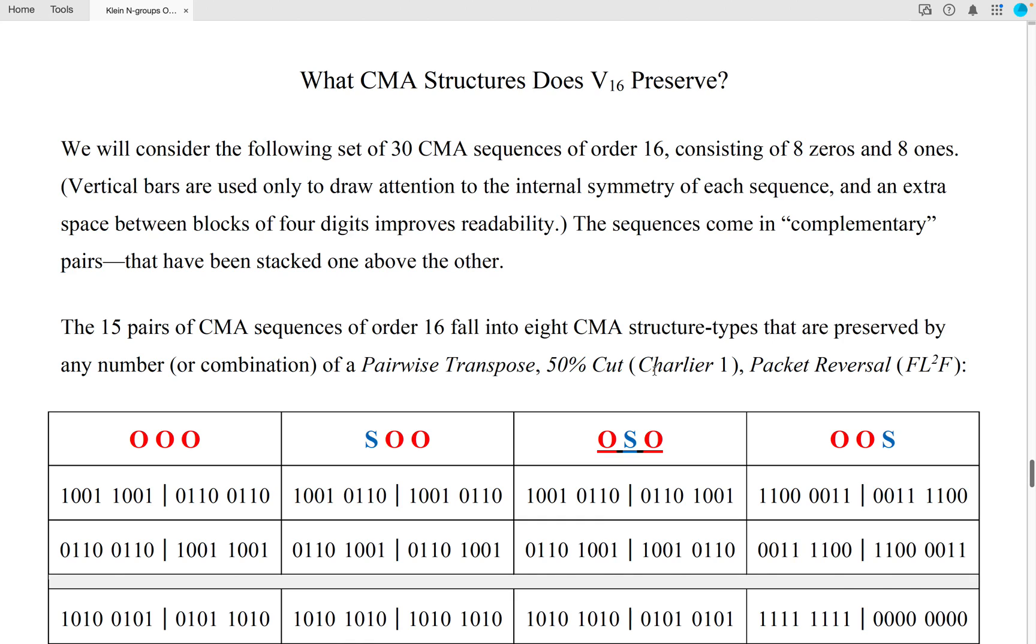Similarly, a packet reversal is equivalent to a shuffle that I've referred to as the first shall be last, and the last shall be first, abbreviated FL squared F, which is also a far more convincing way to, quote, mix a packet of cards that in the end is equivalent to a simple packet reversal.